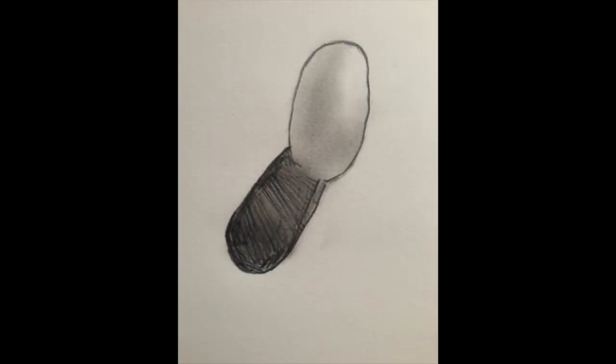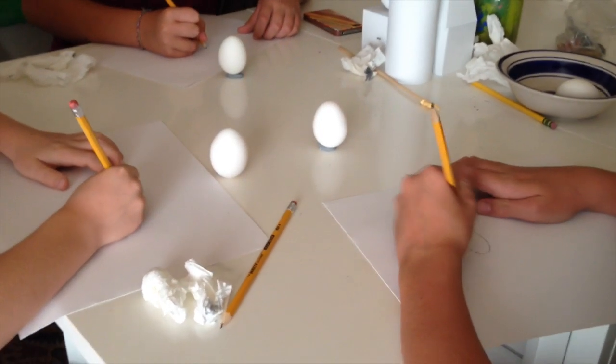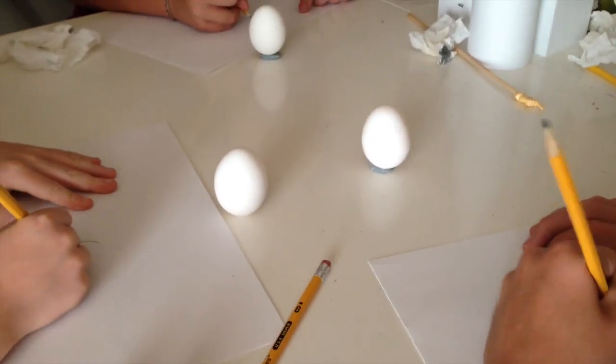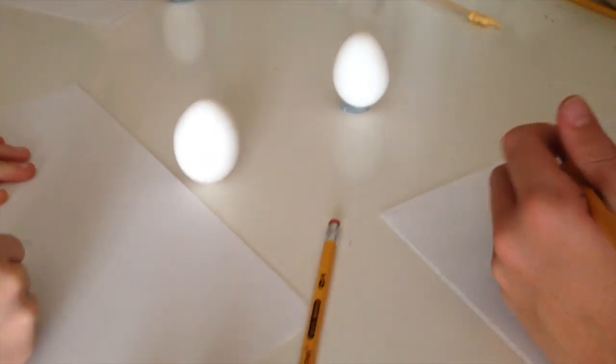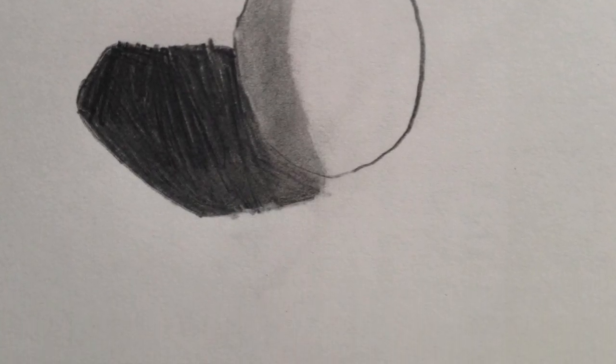They did these today—some of these students are four, some of them are twelve, so their ages range. I hope you enjoyed this introduction into value. Now what I would do is try to set something up, like something that's white, like an egg, and try to draw using these values. I hope you enjoy this tutorial. Have a great day. We'll see you around on YouTube.